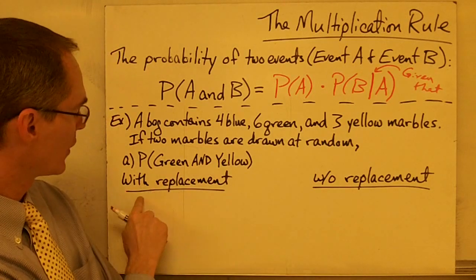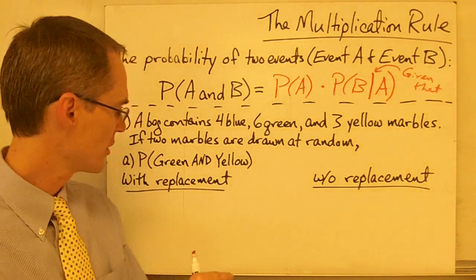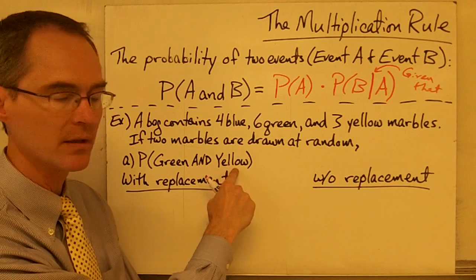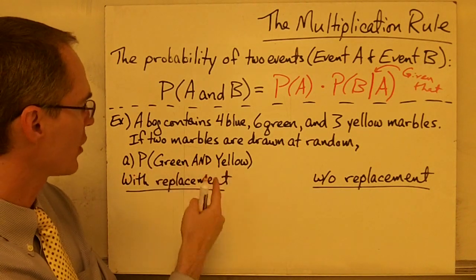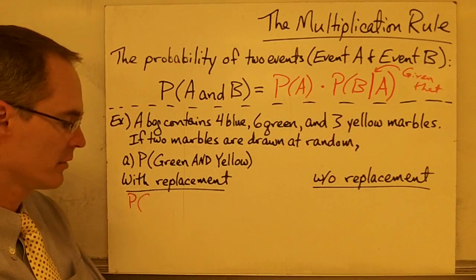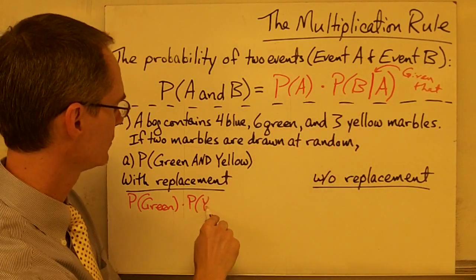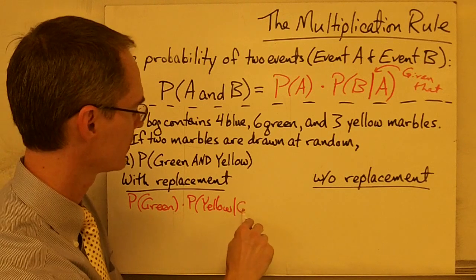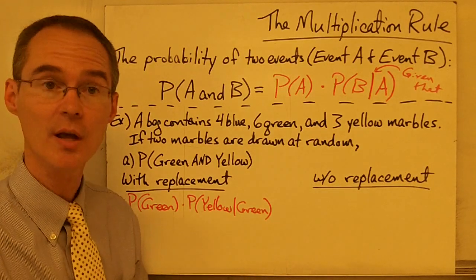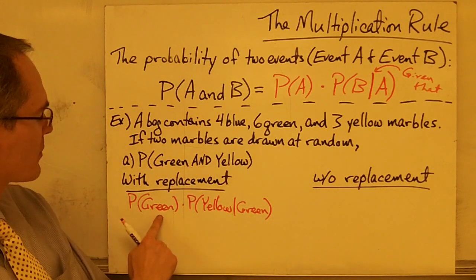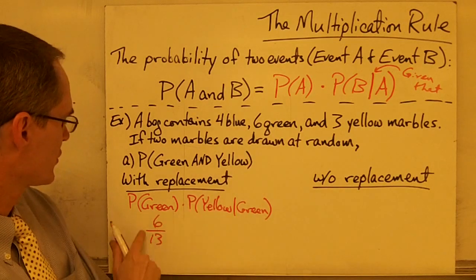For the 'with replacement' case: after I draw the first marble, I put it back in the bag before drawing the second one. The probability of drawing a green marble first is 6 out of 13, since there are 13 marbles total and 6 are green. Since I replace the marble, there are still 13 marbles when I draw the second one, so the probability of drawing a yellow marble given that I drew a green marble first is 3 out of 13 — because replacement means the first draw has no effect on the second.